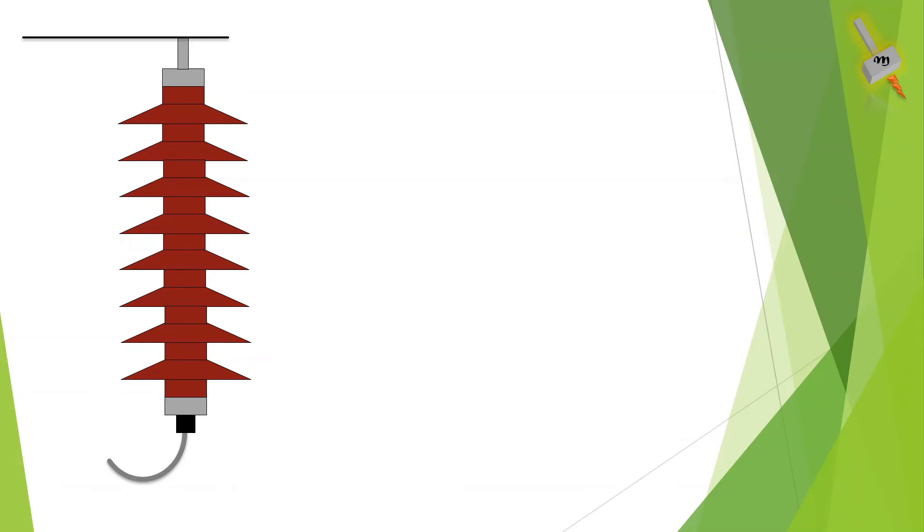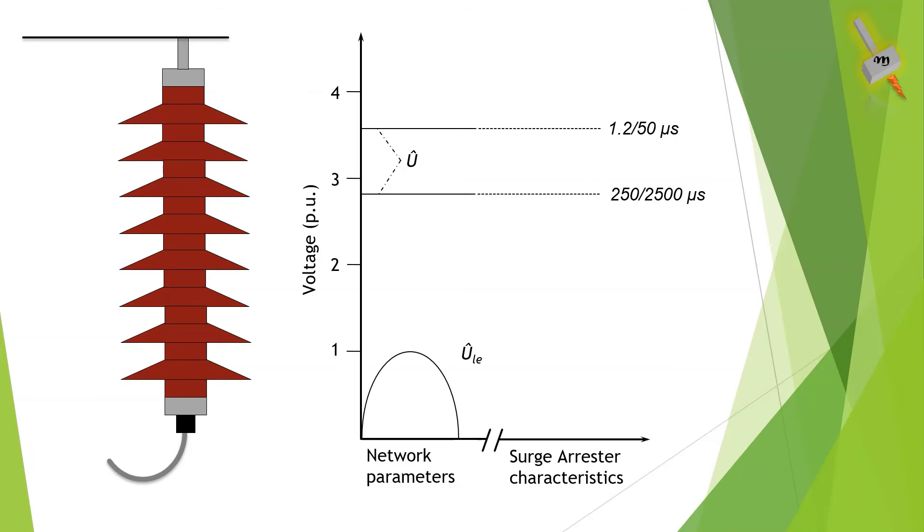Now let's see what happens to a lightning arrester before and after a surge event. This is a line to earth voltage of a three phase system. These are switching and lightning insulation levels of that three phase system. This is the rated voltage of the surge arrester which is derived as earth fault factor times the line to earth voltage.